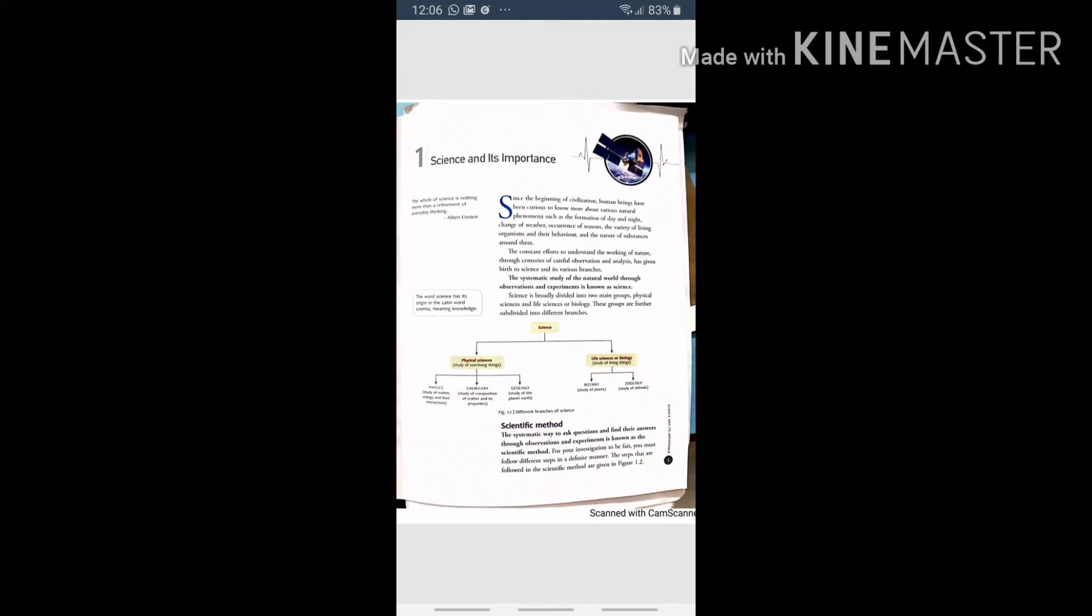The steps that are followed in the scientific method are: first, identifying the problem; doing background research; developing a hypothesis; experimentation and verification; organizing data; drawing conclusions or putting a theory; and application in technology.